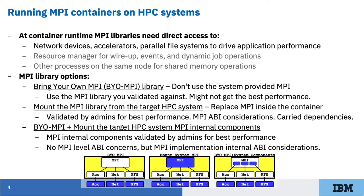Next, you can mount the system-provided MPI over the top of the MPI installed in your container. The advantage is that you're using the recommended version tuned for the system, so you'll likely get the best performance and integration experience. The disadvantage is that you need to make sure your container MPI is ABI-compatible with the mounted system MPI. A standard MPI ABI has been discussed for over a decade in the MPI forum without getting far. However, there exist version pairs of open and closed source MPI implementations that are ABI-compatible. Be careful about carry dependencies — for example, glibc version differences between inside the container and the mounted MPI can cause the application to fail or operate incorrectly.